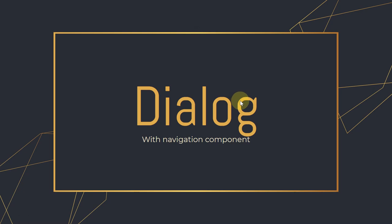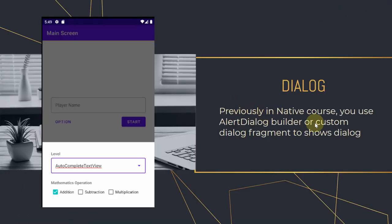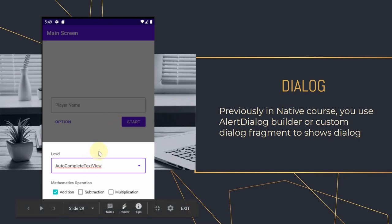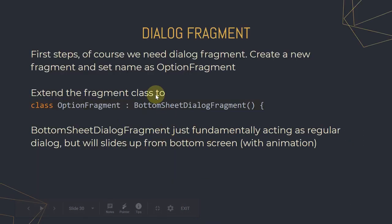Next we talk about dialogs. In the native course you used AlertDialog to show a partial UI on screen without covering the whole screen. In this tutorial I'll show you how to create a dialog without a dialog builder, using only the navigation component — and additionally using a different type of dialog.